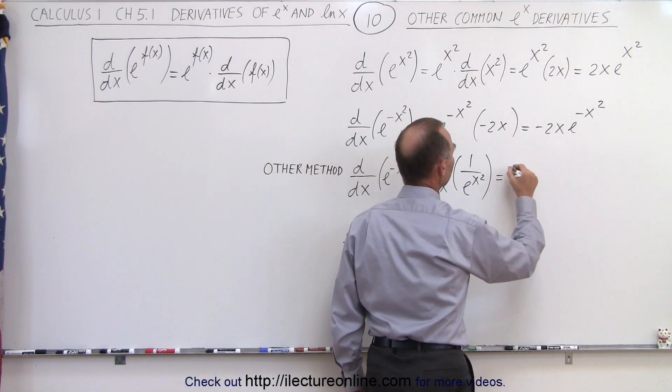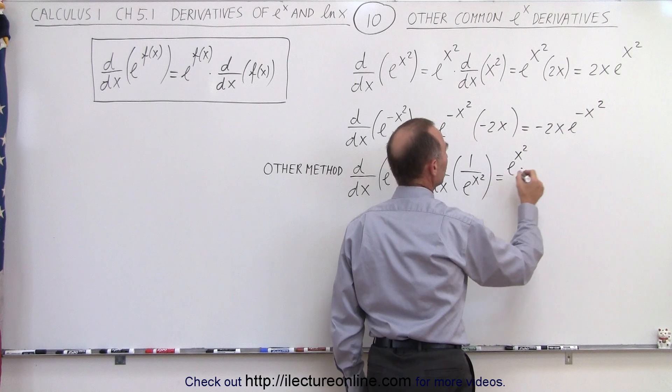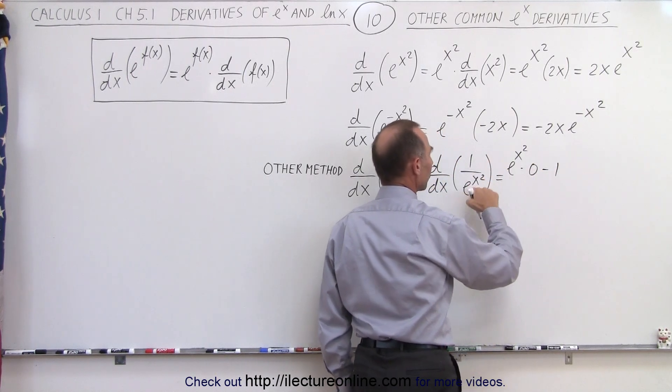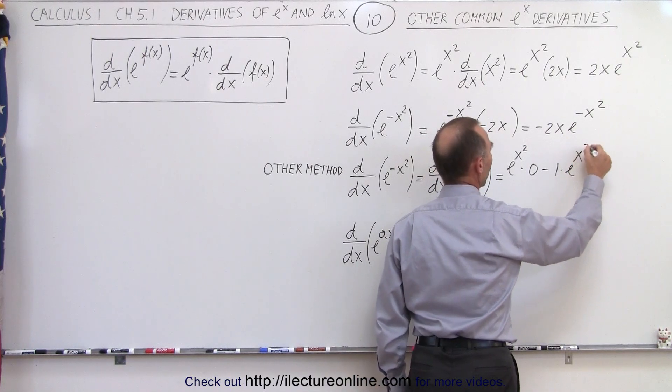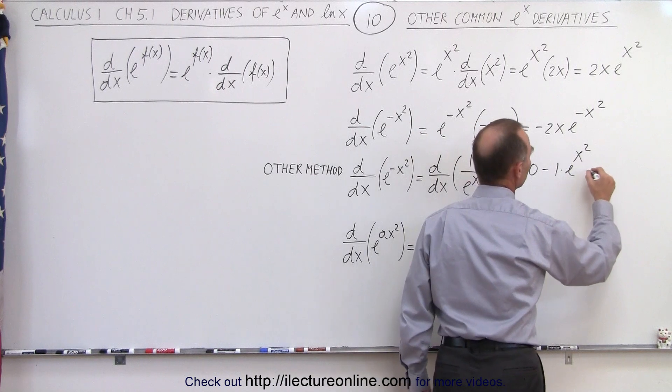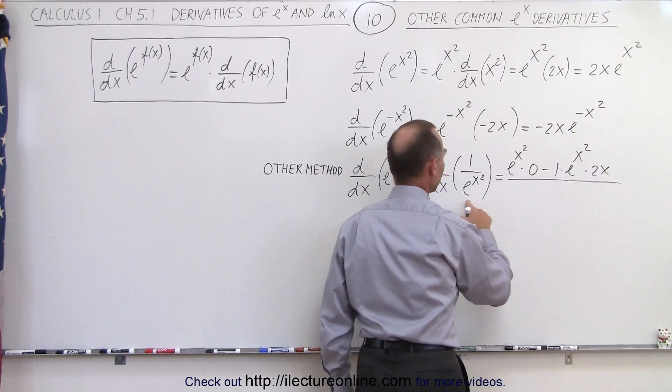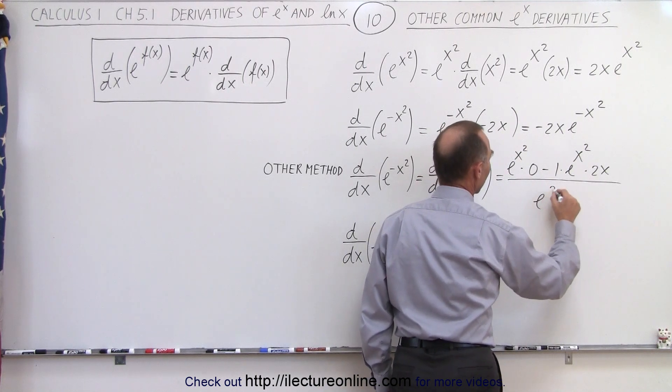So this is equal to the denominator, e to the x squared, times the derivative of the numerator, which is 0, minus the numerator times the derivative of the denominator, which is e to the x squared times the derivative of the exponent, which would be times 2x, all divided by the denominator squared, which is e to the 2 times x squared.